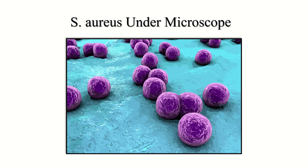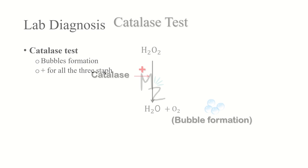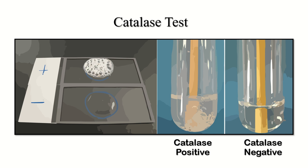Catalase test: confirmed by bubble formation. It is positive for all three Staphylococcus species. Procedure: a petri dish with hydrogen peroxide solution is used — if the bacteria converts hydrogen peroxide into water and oxygen, causing bubbles, it is catalase positive. If bubbles fail to form, it is catalase negative. Catalase-positive bacteria show bubbles in the tube and on the slide; catalase-negative bacteria show nothing.